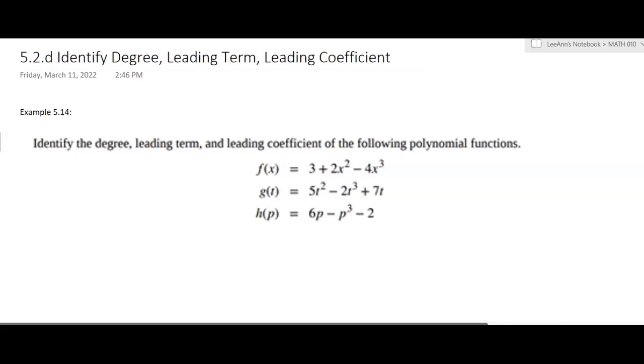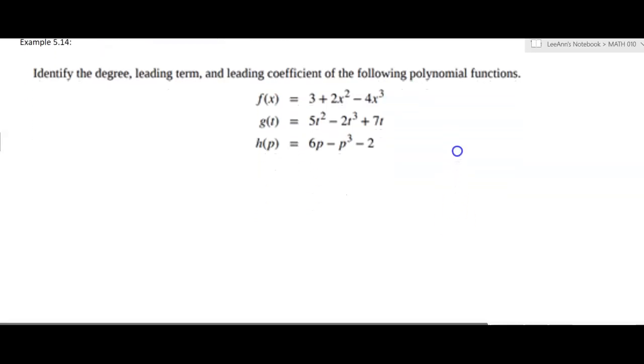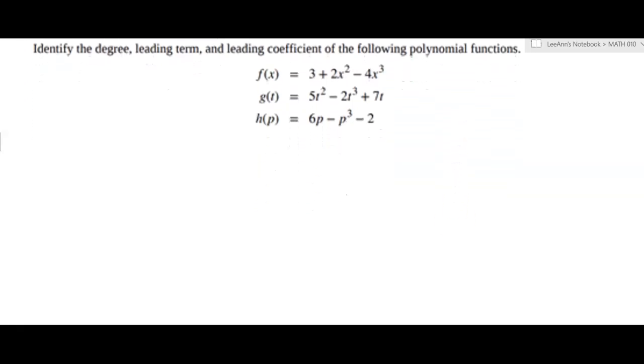Okay, so in this example we're going to identify degree, leading term, and leading coefficient. And there's three functions, right? But they didn't give it to us necessarily in the right order, so we're going to have to switch them around.